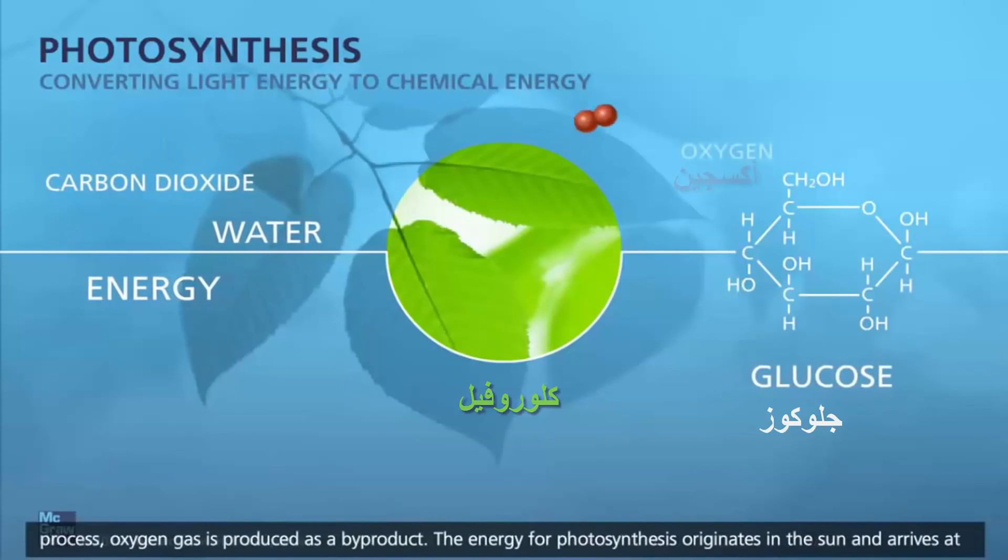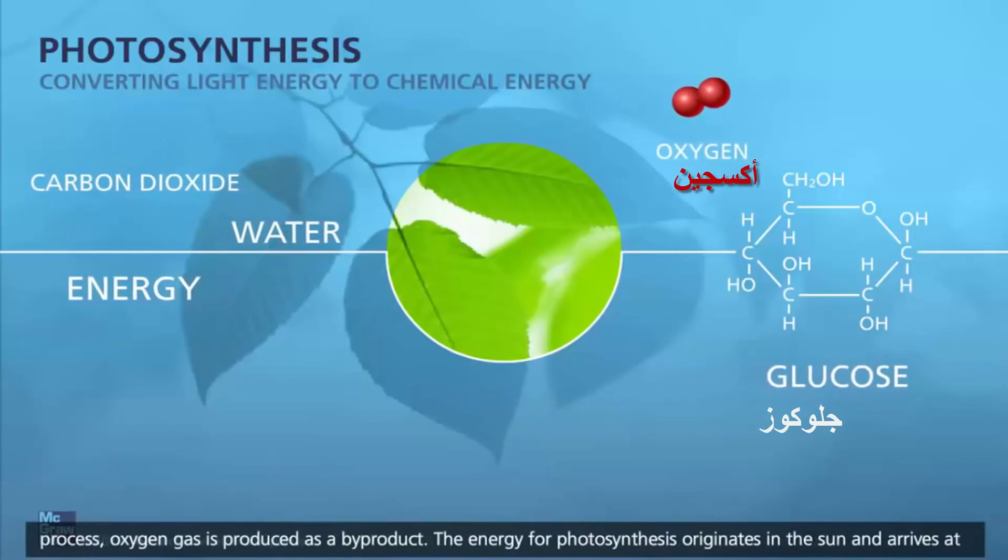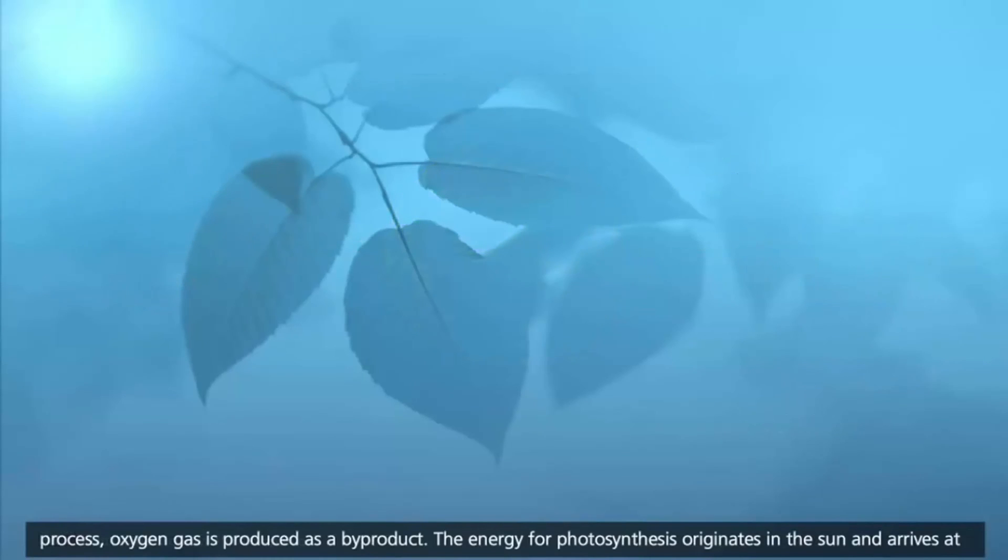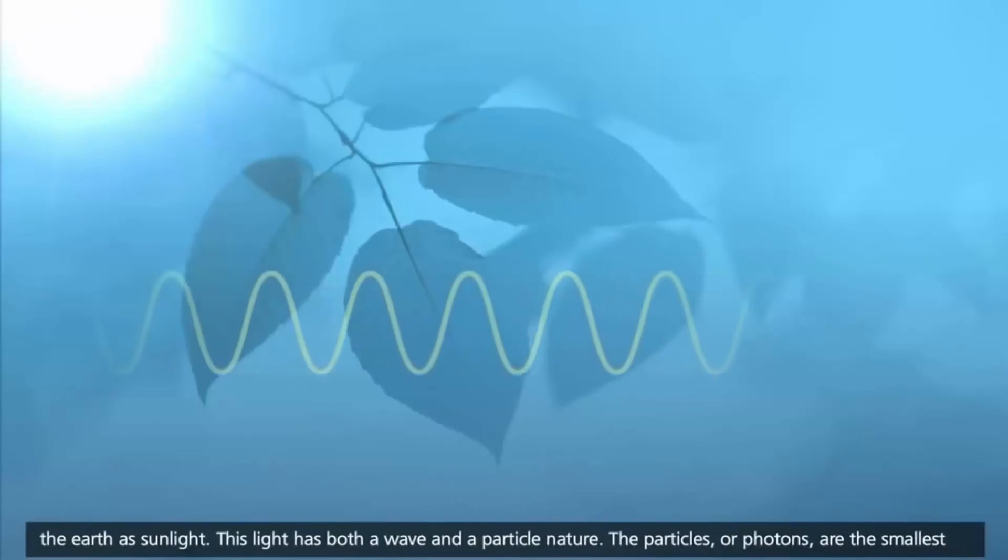In the process, oxygen gas is produced as a byproduct. The energy for photosynthesis originates in the sun and arrives at the Earth as sunlight. This light has both a wave and a particle nature.